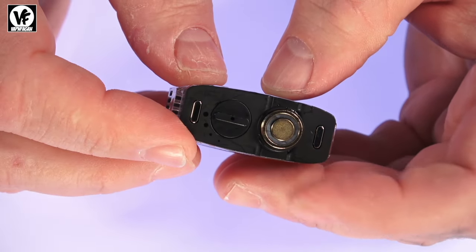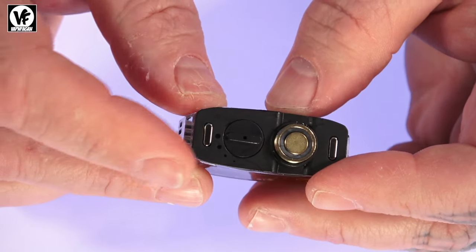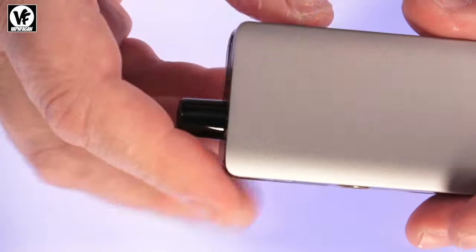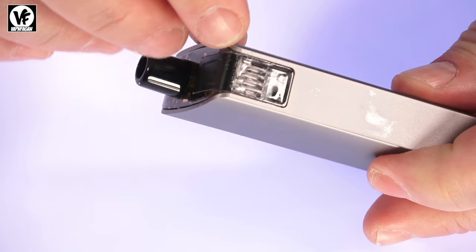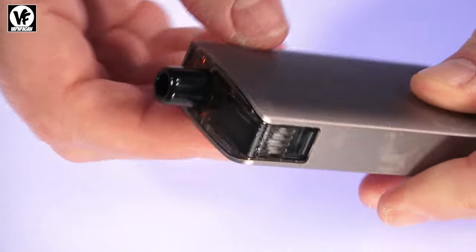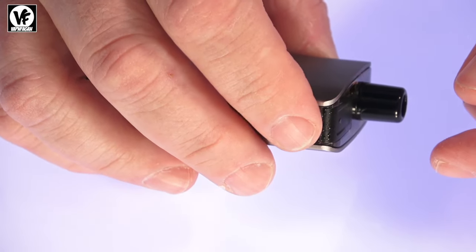It actually has quite a bit of airflow - probably not that ideal for tight MTL. If for some reason you want to get this thing super tight with the airflow, you'll notice the airflow comes in right here. If you hold it like this and your finger is blocking this or over it, it's going to completely shut off the airflow and make it extremely tight.